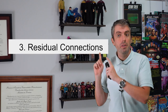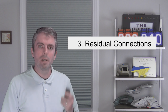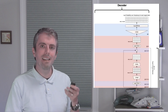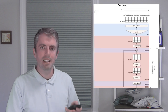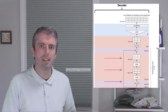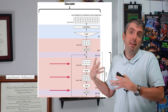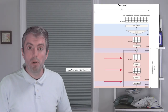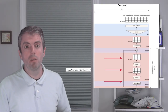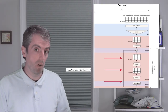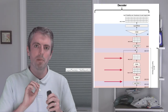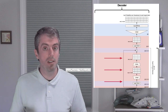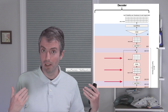Detail number three: residual connections. One of the reasons I really like Mark Riedel's diagram of the transformer is that the residual connections are quite clear. Instead of only taking the output of one feed-forward submodule, we combine the output of a sublayer with the sublayer's input. This helps prevent vanishing gradients and makes sure that backpropagation makes it all the way back to the lower layers.